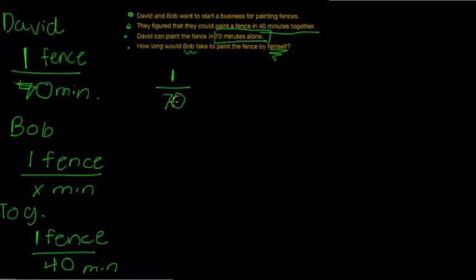He completed 100% of the work in 70 minutes. Now, we're going to add Bob's time. Bob completed 100% of the work in X amount of minutes. This is equal to the amount they took together, because if you put them working together, then this will be the time that they took. So, 1 to 40.